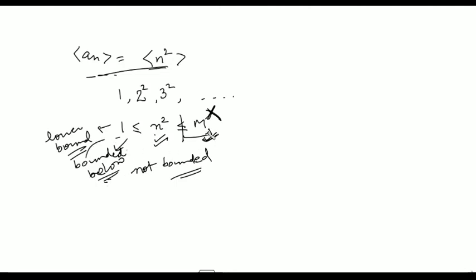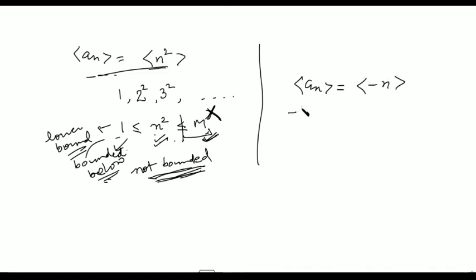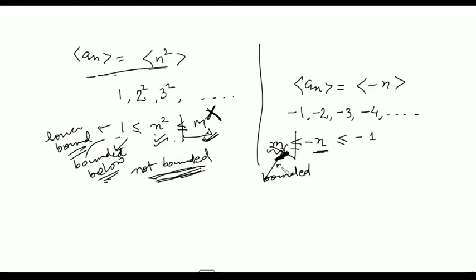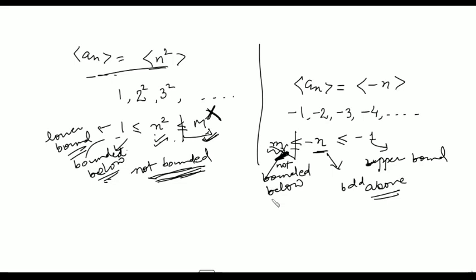So n² is bounded below but not bounded above, therefore it is not a bounded sequence. Similarly, consider a_n = -n: the terms are -1, -2, -3, -4, and so on. This whole sequence is less than or equal to -1, but we cannot find a number small m such that the sequence is greater than or equal to small m. So this sequence is not bounded below, however it is bounded above by -1, and therefore -n is not a bounded sequence.